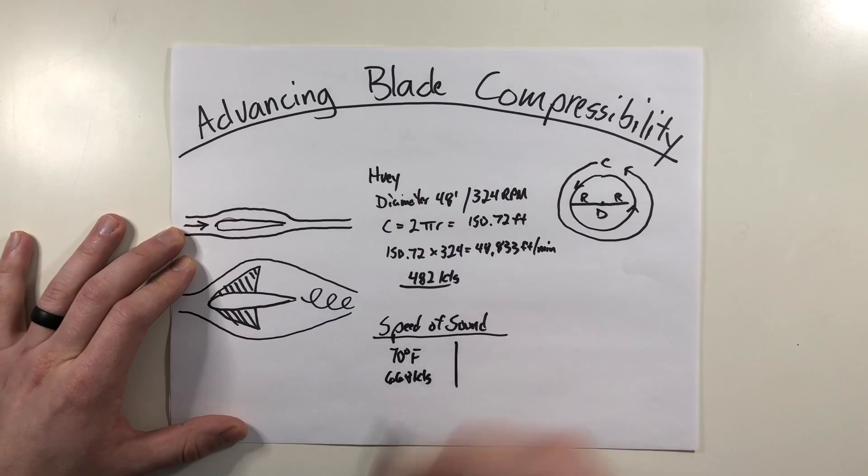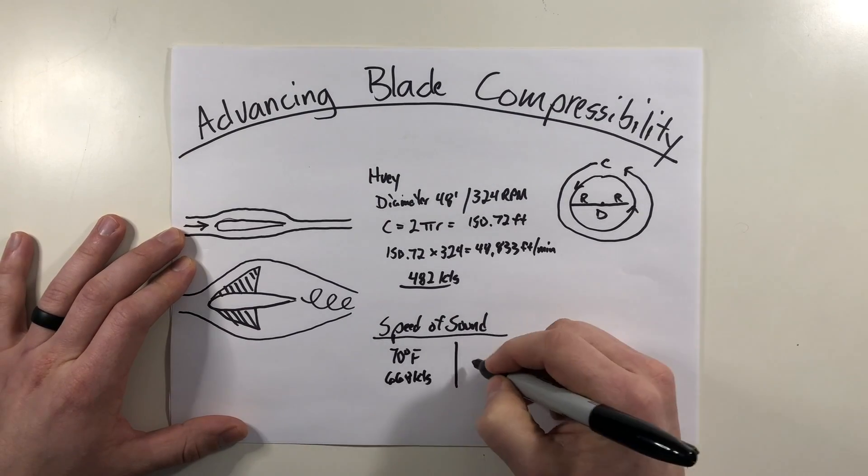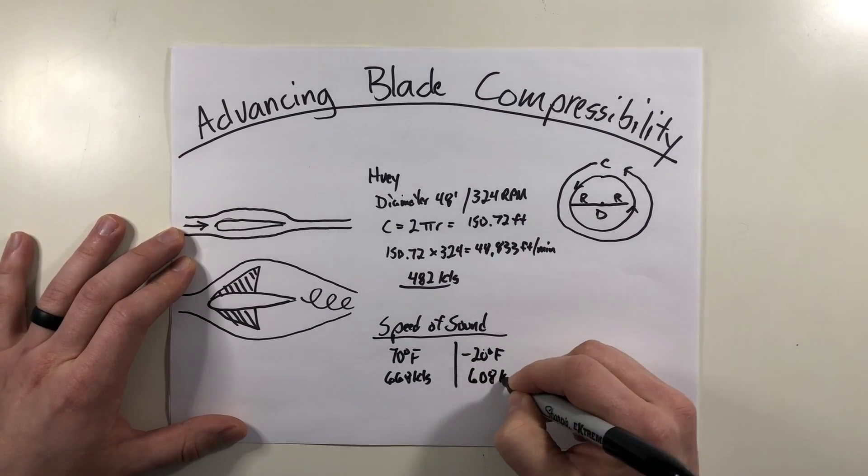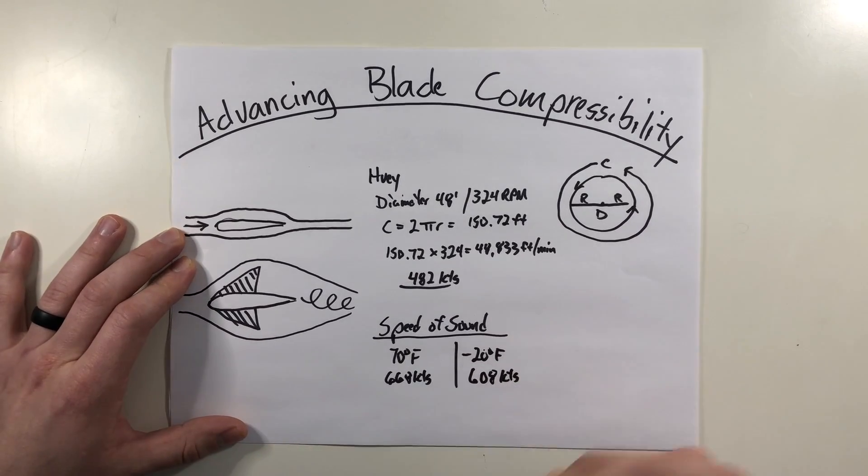But as we get colder, that speed of sound gets a little bit slower. So at minus 20 degrees Fahrenheit, that speed of sound is 608 knots. So why is this important here? Well now we can start to compare it to our blade speed.